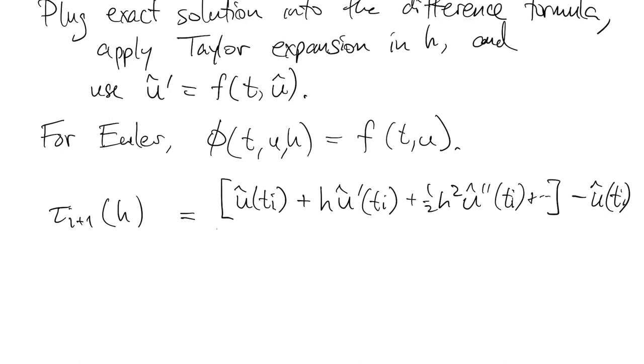From this, we subtract u hat at ti, divide it all by h, and then we subtract f from all of that.